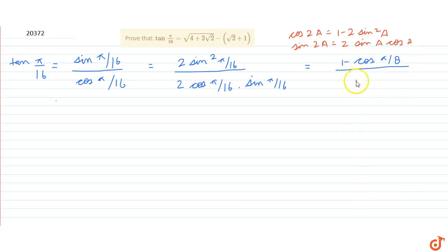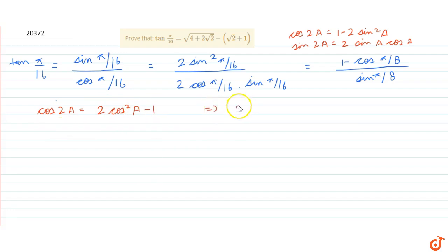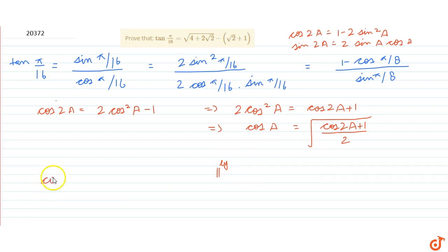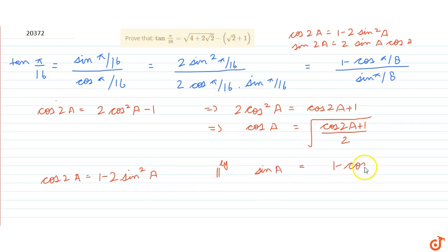Now look at the formula for cos 2a which equals 2 cos²a minus 1. This implies that 2 cos²a equals cos 2a plus 1, and therefore cos a equals the square root of (cos 2a plus 1) divided by 2. Similarly, from cos 2a equals 1 minus 2 sin²a, we get sin a equals the square root of (1 minus cos 2a) divided by 2.